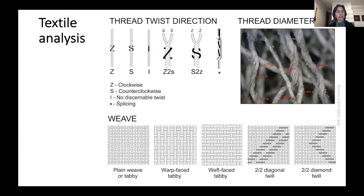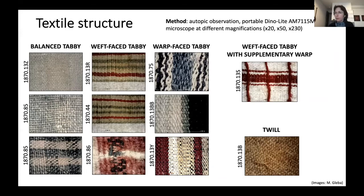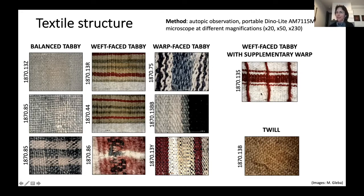You can see here close-ups at the same magnification of different kinds of weaves. We have several balanced tabbies — they have more or less the same number of threads per centimeter, some slightly finer, some slightly coarser. We have several weft-faced tabbies, which can be quite different in how they look and appear. We have warp-faced tabbies. We also have one textile with supplementary warps — extra warps that float and create checkered effects. And we have just one tiny fragment of a twill, which was a little unusual in the whole collection, also because it was very small.